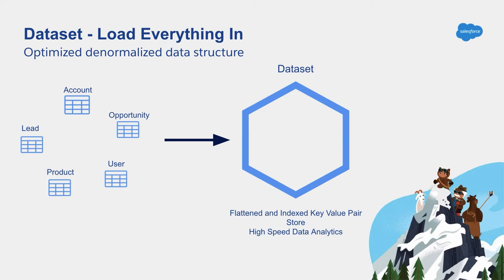For example, I have a dataset about opportunities — that's going to be our exercise. We want to bring opportunity information from the opportunity table, account information, and maybe activities down the road. Technically, the dataset uses a flattened, inverted index key-value pair storage system — a fancy way of saying it uses a proprietary file storage algorithm to compress and query large volumes of data quickly.